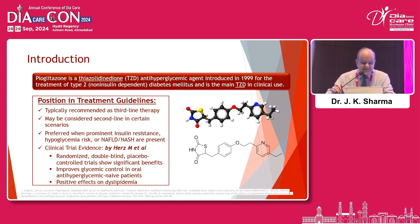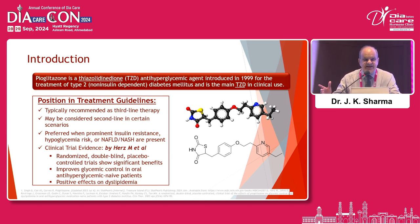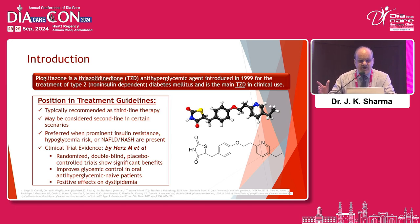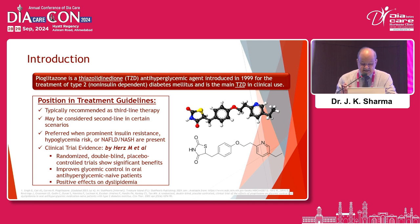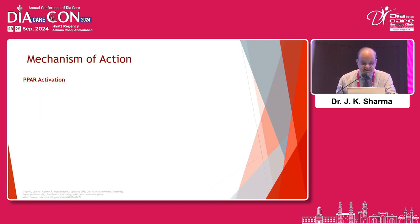It is positioned in treatment guidelines as typically third-line therapy — I don't know why. Whenever we suspect in type 2 diabetes that a patient has insulin deficiency as well as insulin resistance, proper patient selection is very important, and we should think of it as second-line also, not just third-line. It is preferred when there is prominent insulin resistance and hypoglycemia risk, as various clinical trials have shown.